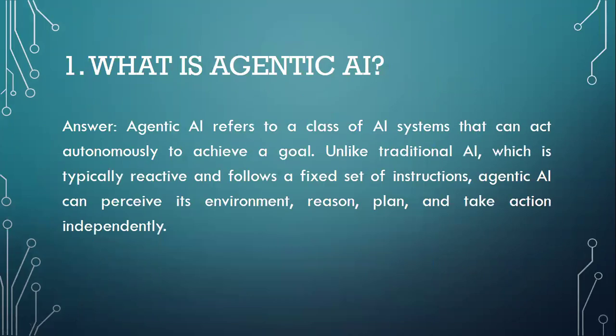What is Agentic AI? Agentic AI refers to a class of AI system that can act autonomously to achieve a goal. Unlike traditional AI, which is typically reactive and follows a fixed set of instructions, Agentic AI can perceive its environment, reason, plan, and take action independently. Moving to question number two.